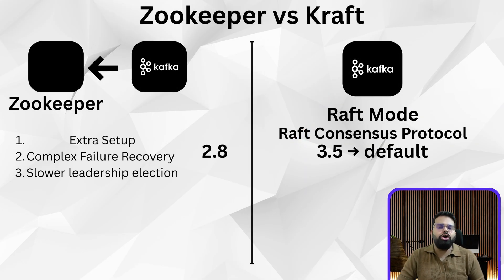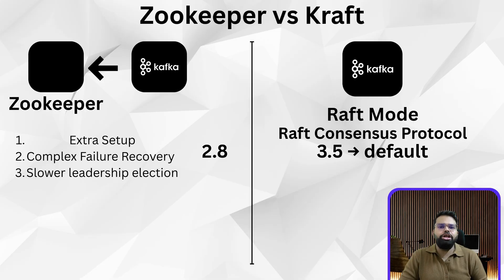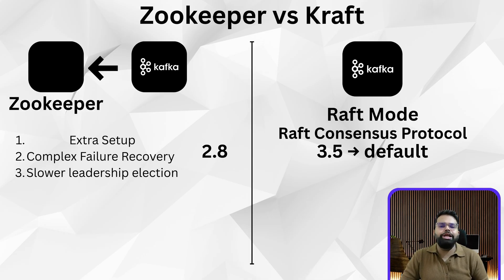Now let's talk about the brain behind all this. Historically, Kafka used ZooKeeper to store metadata — brokers, topics, partitions, leaders, and more. But it came with baggage: extra setup, complex failure recovery, and slower leadership election. So Kafka switched from ZooKeeper to KRaft — Kafka's Raft-based metadata mode, introduced in Kafka 2.8 and now the default in 3.5+. KRaft eliminates ZooKeeper entirely. Kafka now manages its own metadata internally using the Raft consensus protocol, simplifying operations and speeding up leader election.